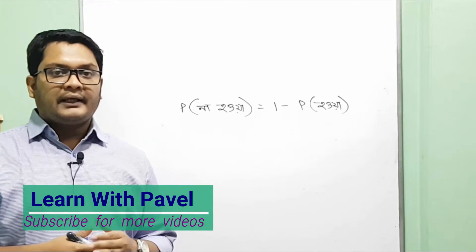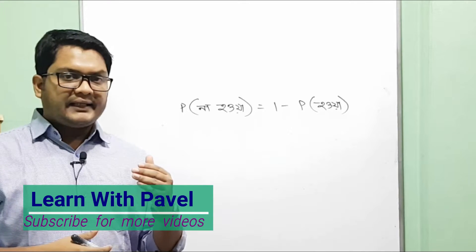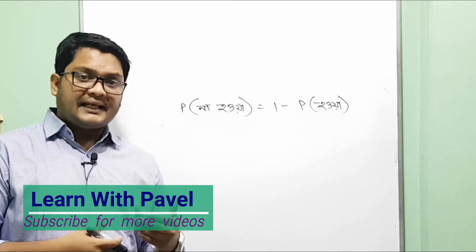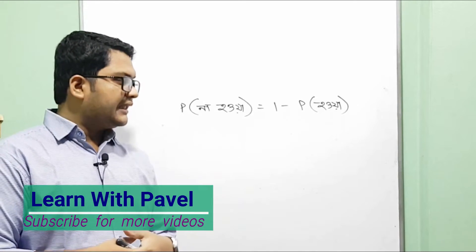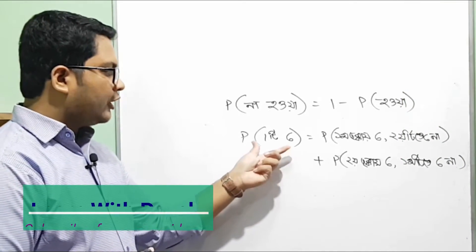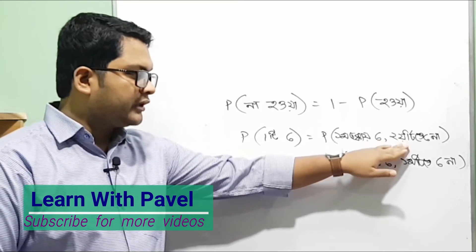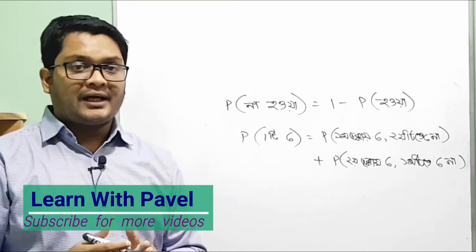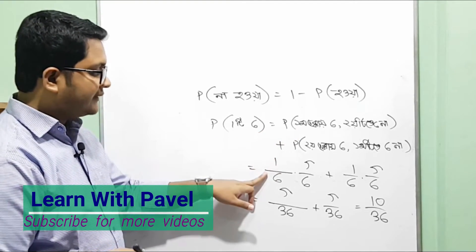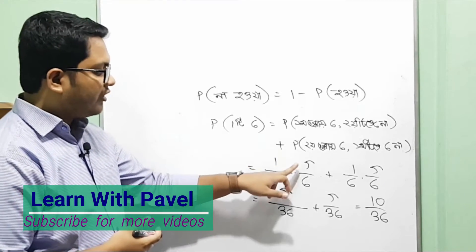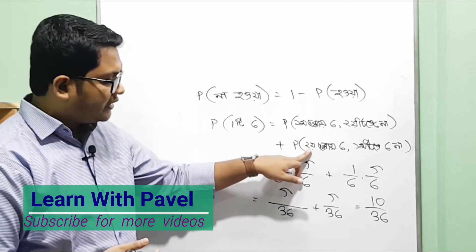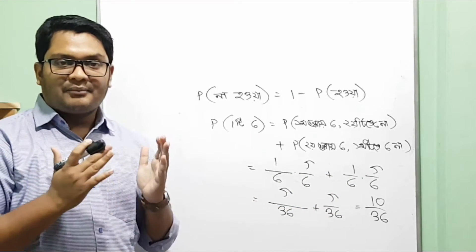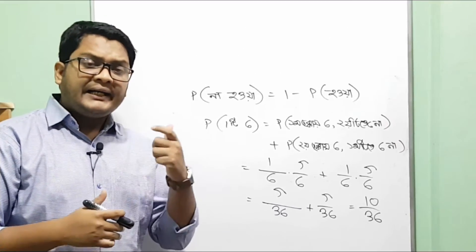Similarly, the probability of 1 is 1 and the probability of 2. We can write the probability of 6. Using the additive law, the first one is 5 by 36, plus the second one is 1 by 6, giving us 5 by 36 plus 5 by 36, which is 10 by 36. So we can solve this problem.